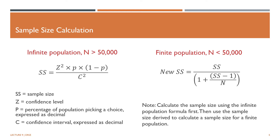Here are examples of sample size calculations. The first is for infinite population where the population size is more than 50,000, where the sample size is equivalent to the confidence level squared multiplied by p — the percentage of population picking a choice — multiplied by 1 minus p, over c squared, where c is the confidence interval. The second formula is for finite population where the population size is less than 50,000. To calculate the sample size for a finite population, first calculate it using the infinite population formula, then use that result to calculate the finite population sample size.